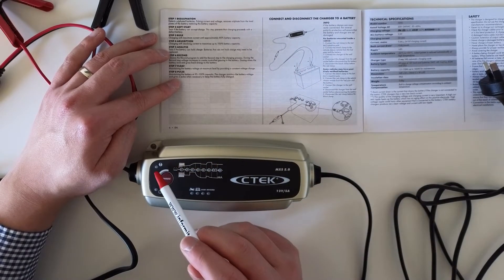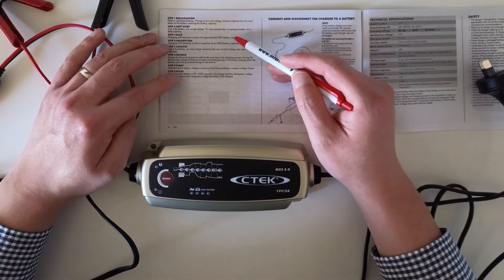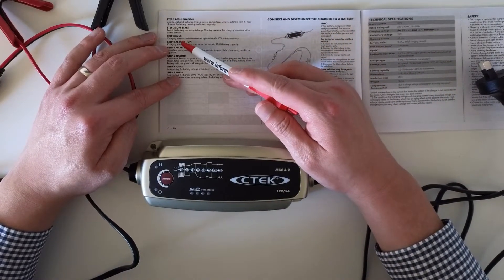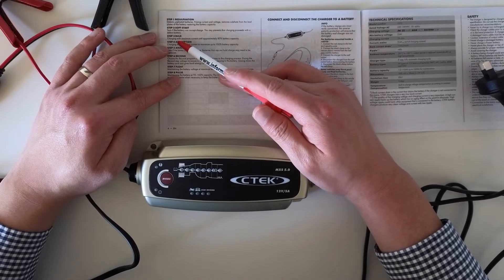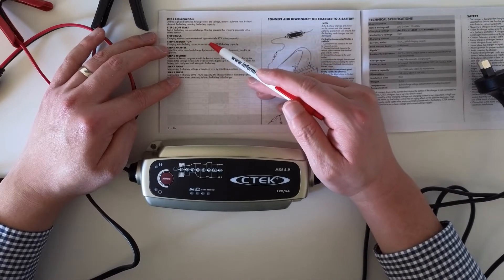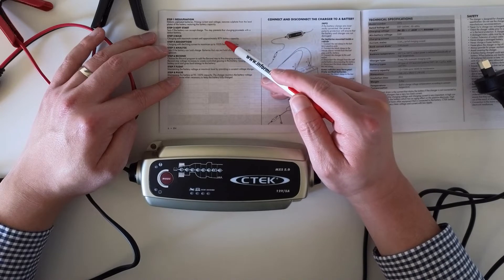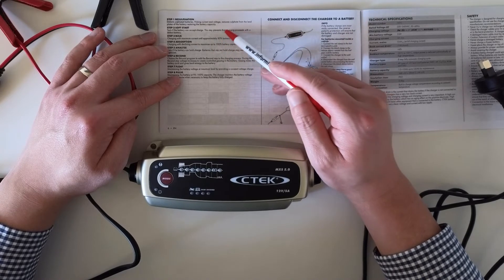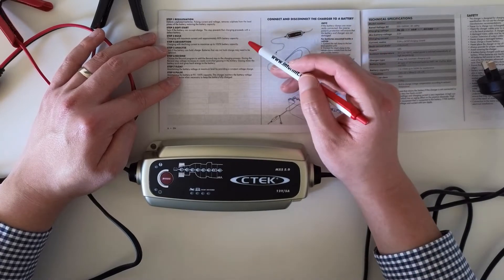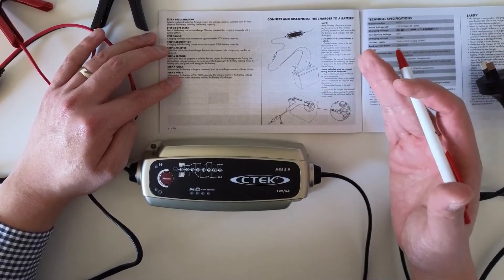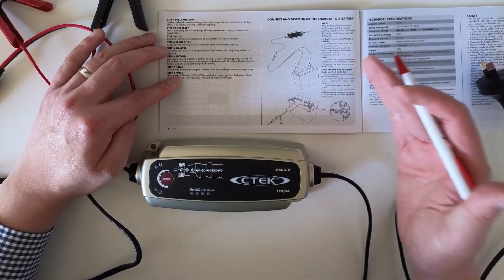And the third step is bulk. The bulk step provides the majority of the charging, so you would charge the battery to 80 percent battery capacity. But as I said to you guys earlier, at least for Ford, the auto start function requires the battery to be at least 75 percent of charge.